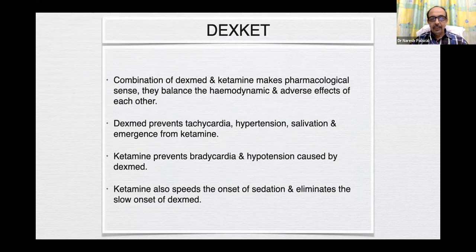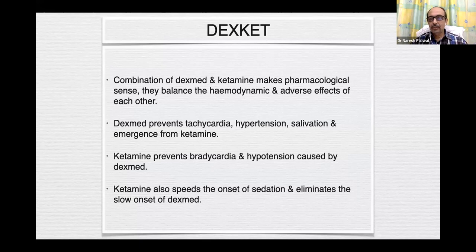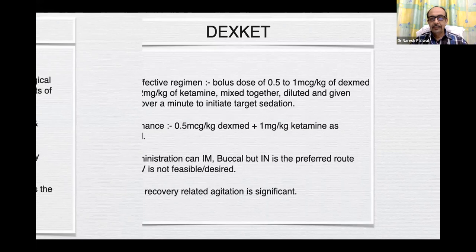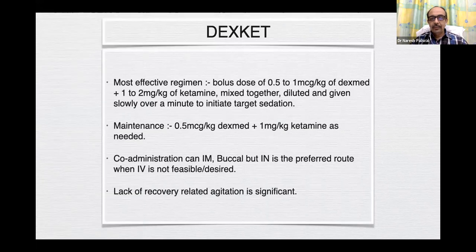The combination of dexmedetomidine and ketamine makes pharmacological sense. They balance the hemodynamic and adverse effects of each other. Dexmed prevents the tachycardia, hypertension, salivation, and emergence phenomena from ketamine, and ketamine prevents the bradycardia and hypotension caused by dexmedetomidine. Ketamine also speeds the onset of sedation and eliminates the slow onset of dexmedetomidine. The most effective regime is a bolus dose of 0.5 to 1 mcg per kg of dexmed plus 1 to 2 mg per kg of ketamine mixed together, diluted, and given slowly over one minute to initiate target sedation.